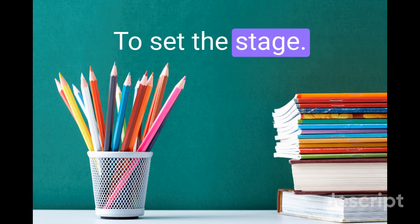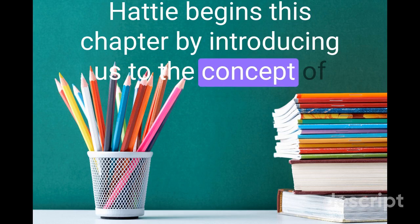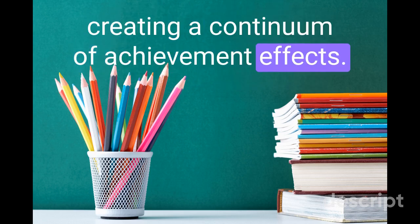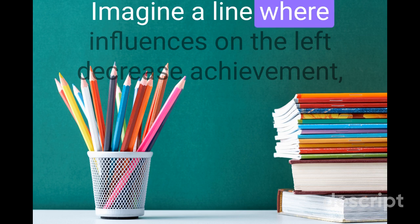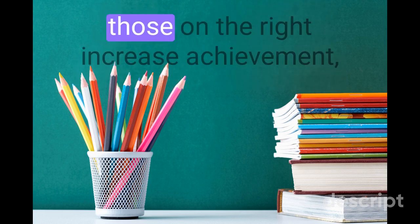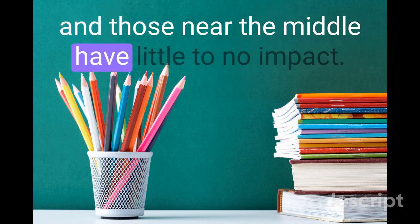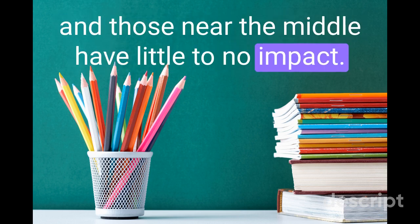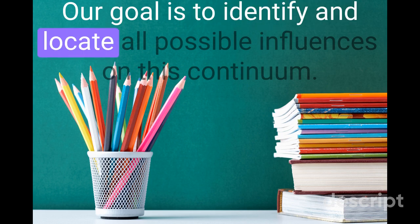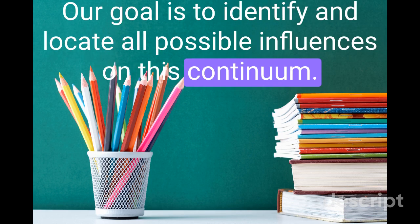To set the stage, Hattie begins this chapter by introducing us to the concept of creating a continuum of achievement effects. Imagine a line where influences on the left decrease achievement, those on the right increase achievement, and those near the middle have little to no impact. Our goal is to identify and locate all possible influences on this continuum.